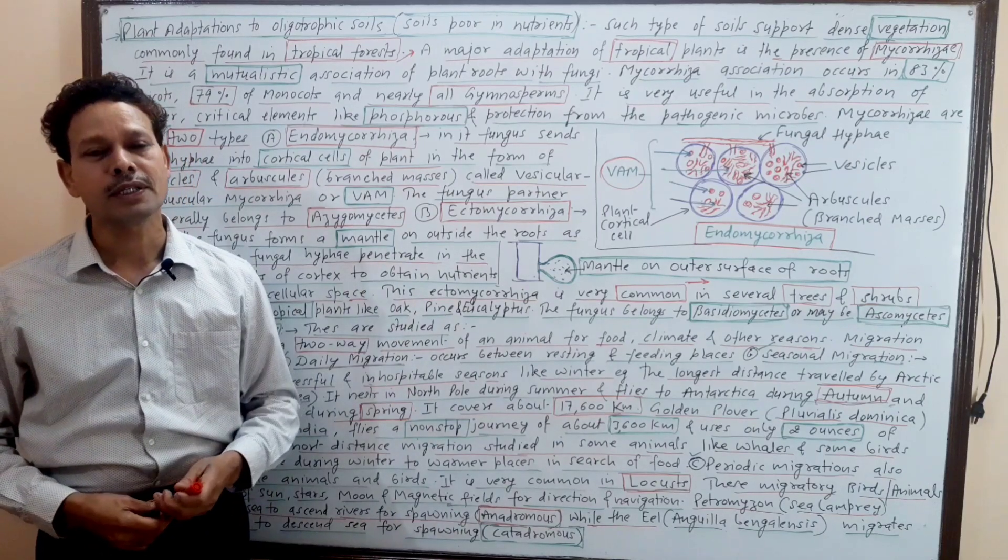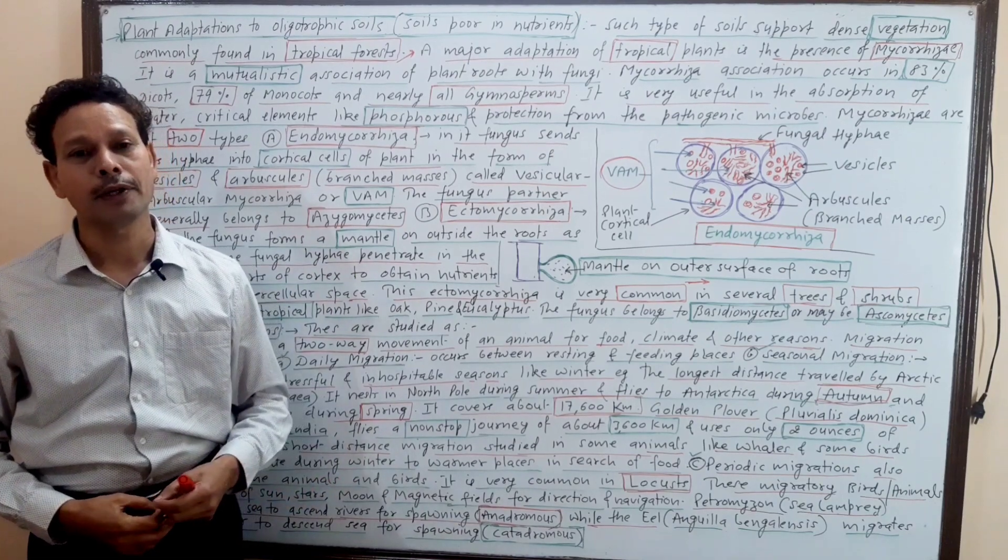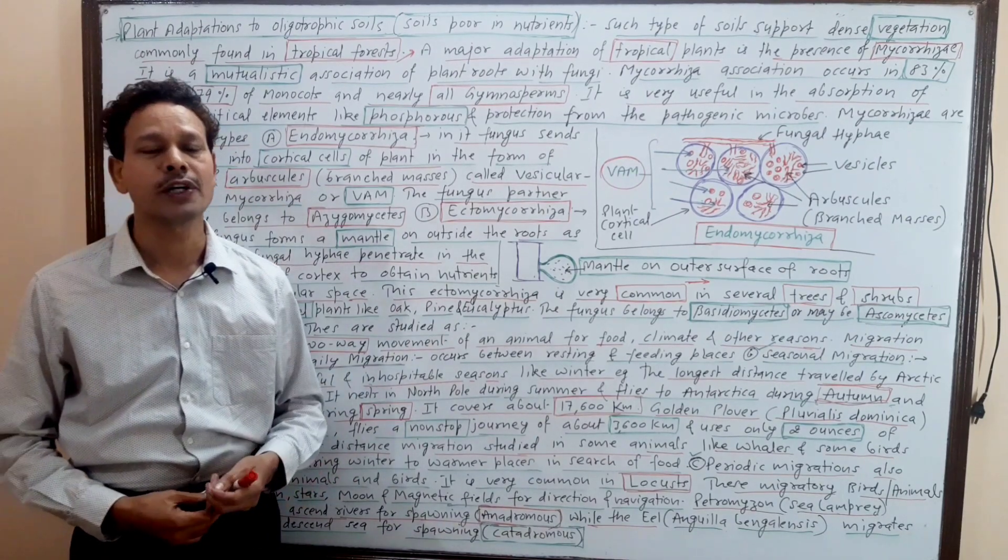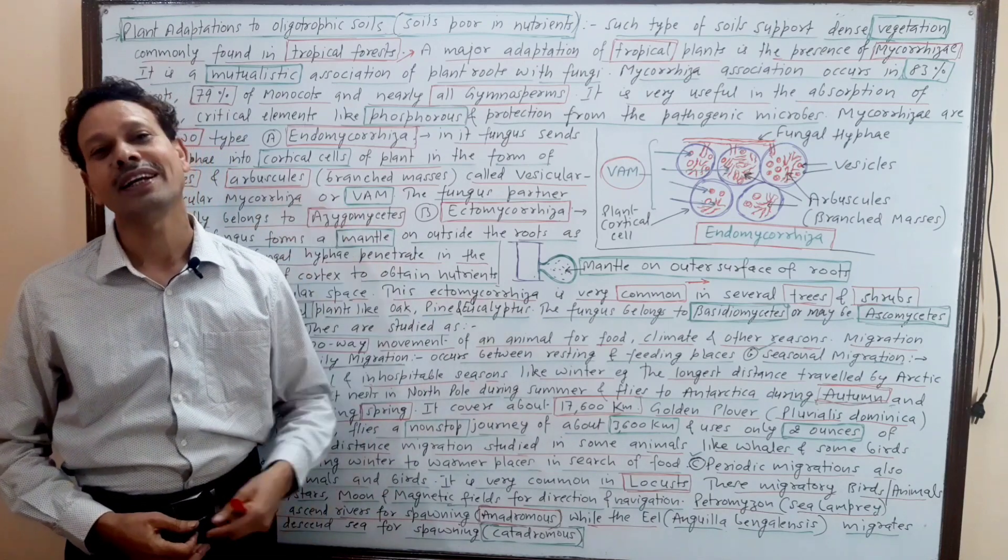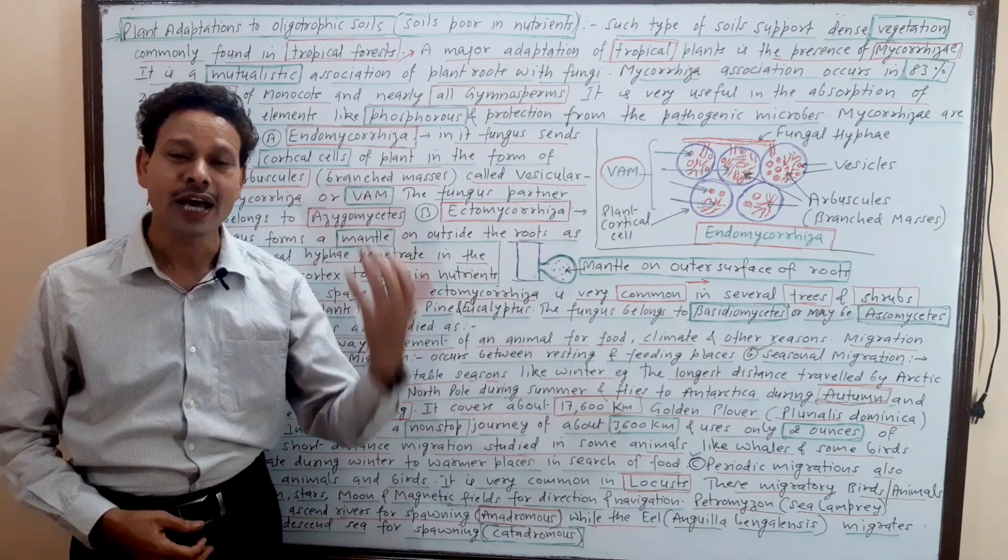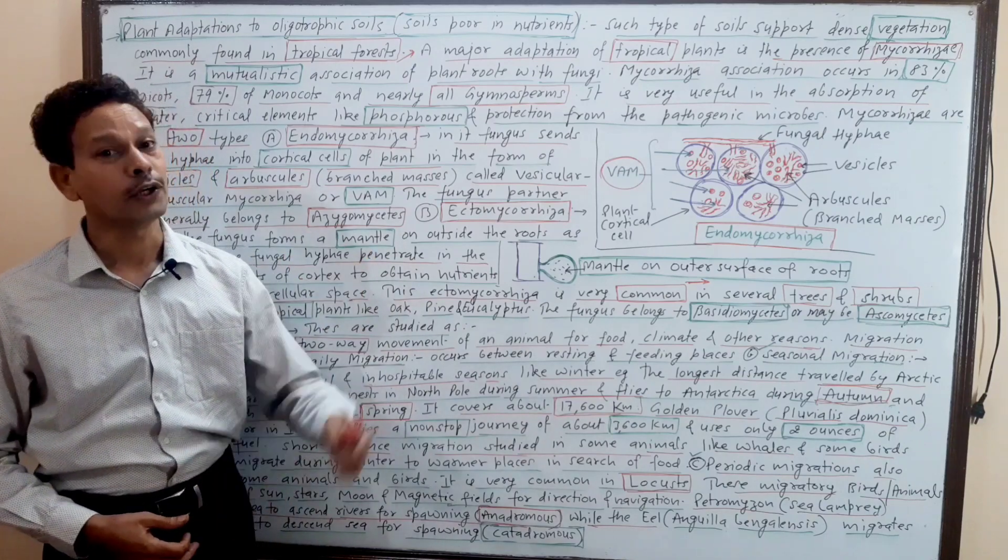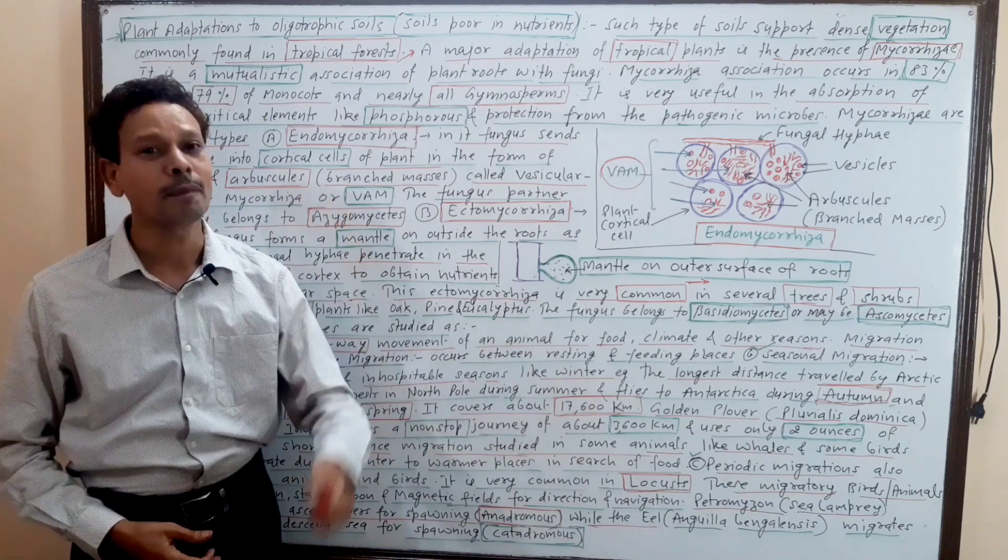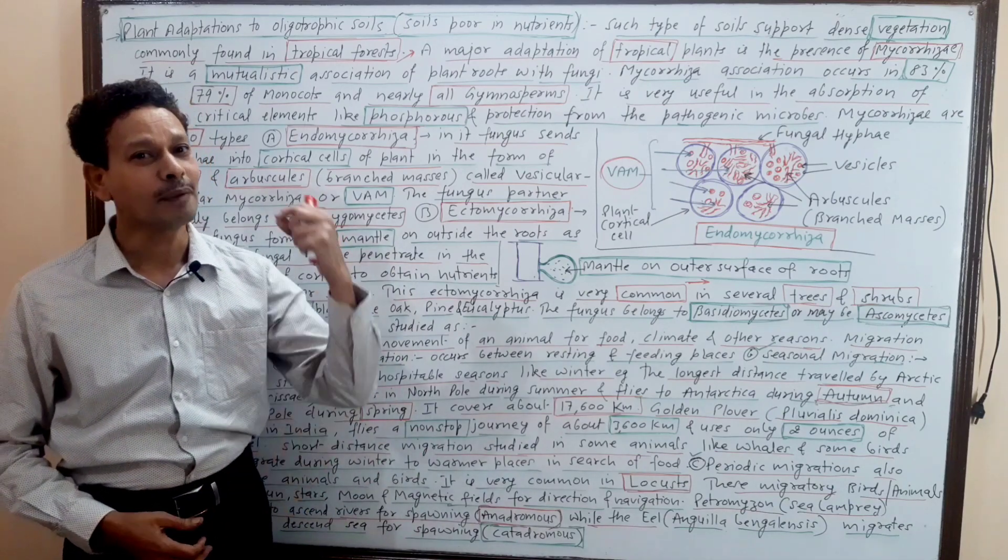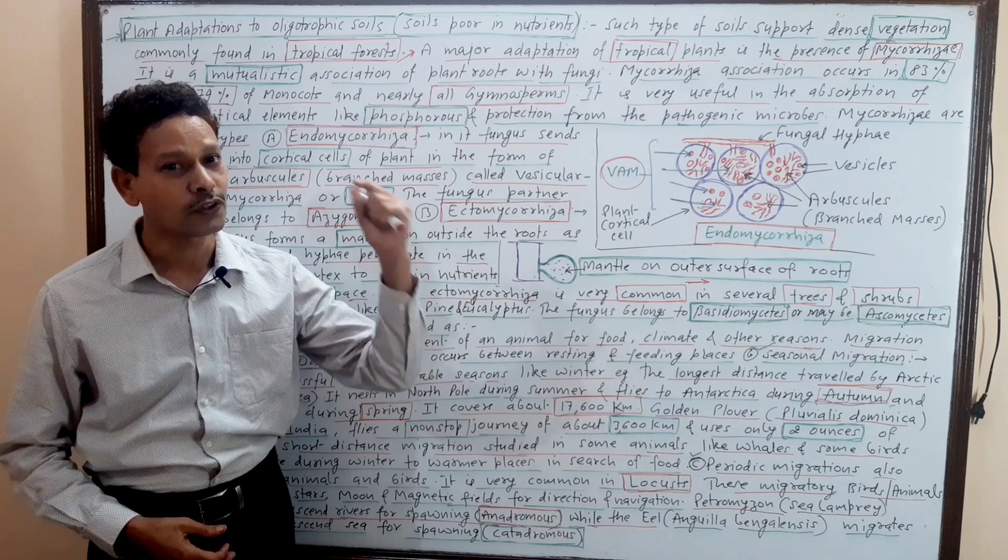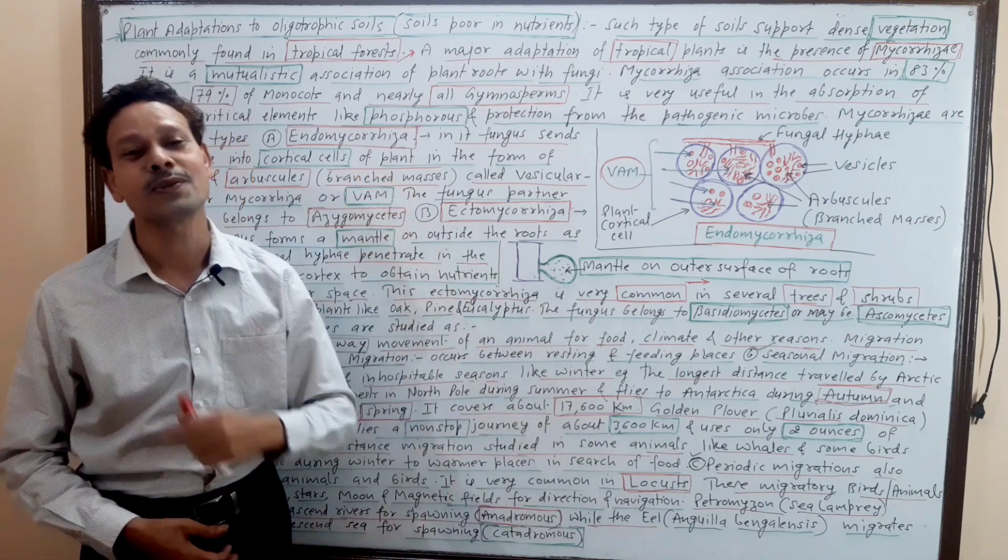Dear students, today we will discuss some very important topics of plant adaptations and animal adaptations. Before this lecture, we have studied some plant adaptations in aquatic conditions, xerophytic conditions, and saline conditions. Today we will discuss plant adaptations in oligotrophic soils. The name indicates oligotrophic nutrients, meaning plant adaptations in poor soil.